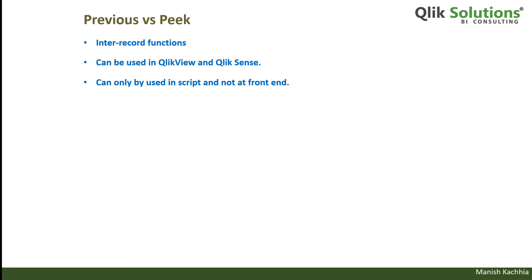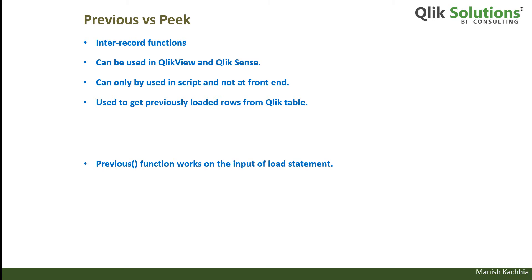We can only use them in Qlik script — we cannot use them in the Qlik frontend, meaning we cannot use them inside any chart or table object. These functions are used to get previously loaded rows from a Qlik table. The Previous function works on the input of the load statement, while the Peek function works on the output of the load statement.